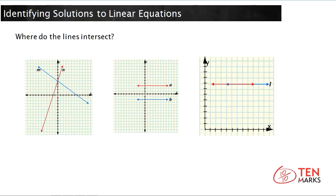Let me show you this visually to help you understand. If I had a system of equations and I graphed it here in graph one, I graph line M in blue and line N in red, and these two lines intersect at a single point. If the lines intersect at one point, it means there is one solution.